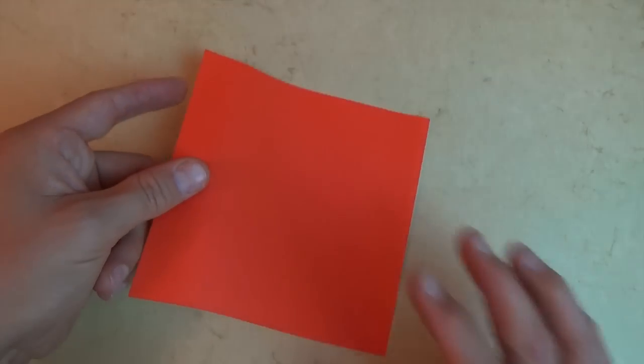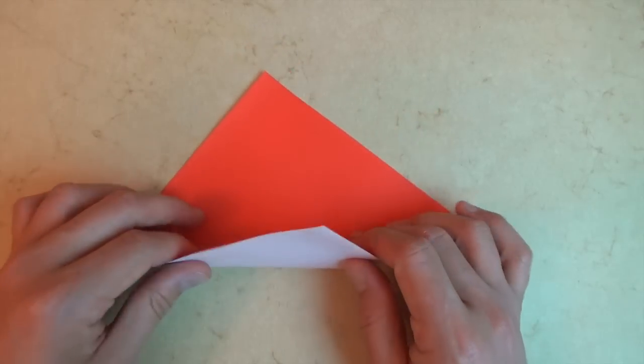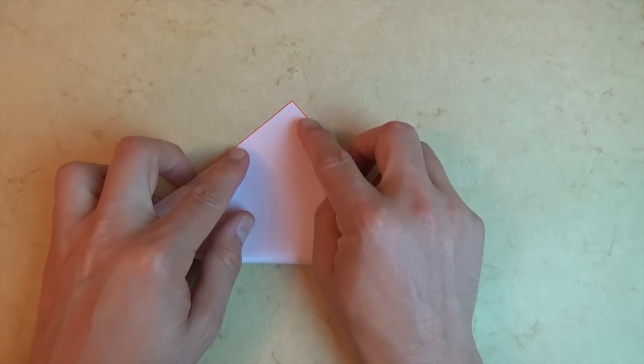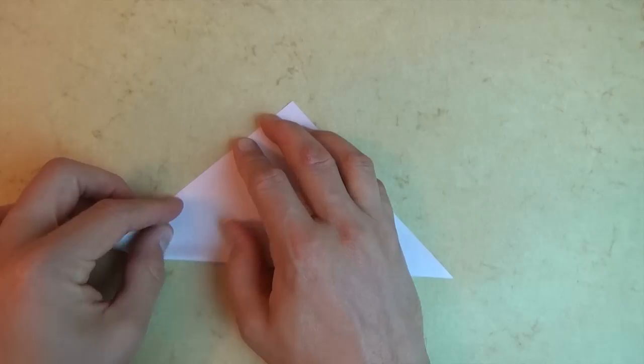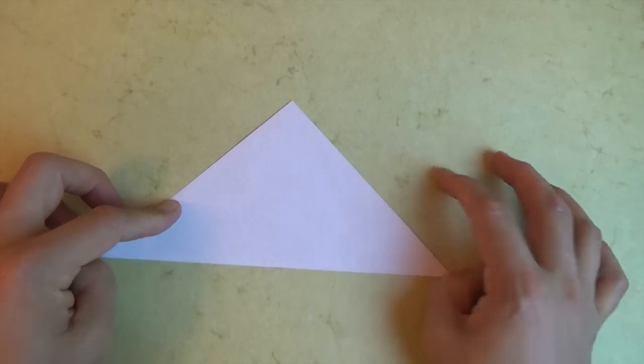But for this tutorial, I'm going to use a six inch square of kami. So let's begin colored side up and valley fold in half. Try to make really exact folds and crease sharply.